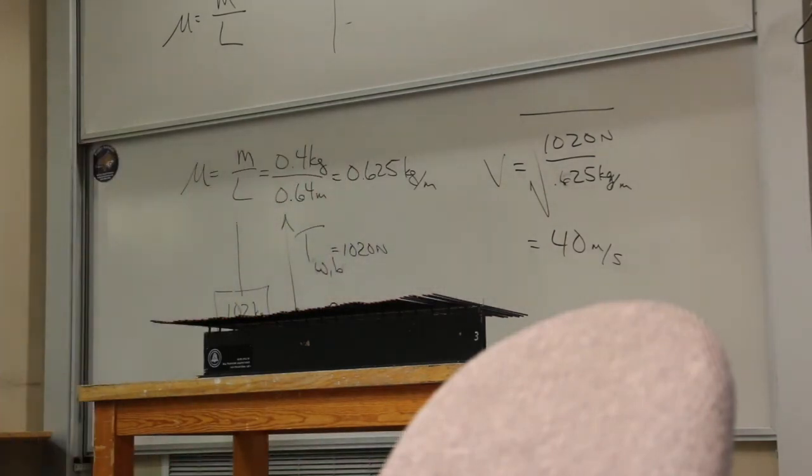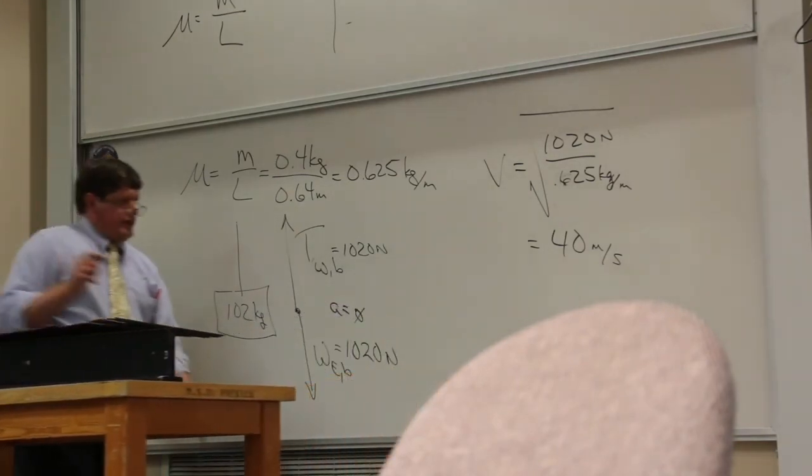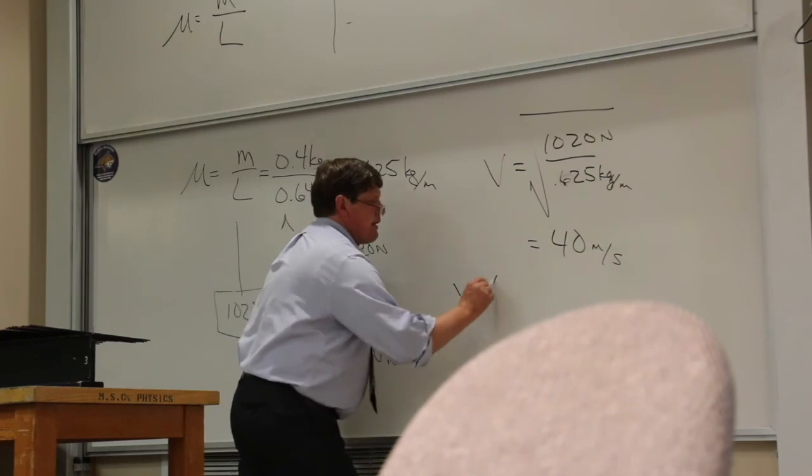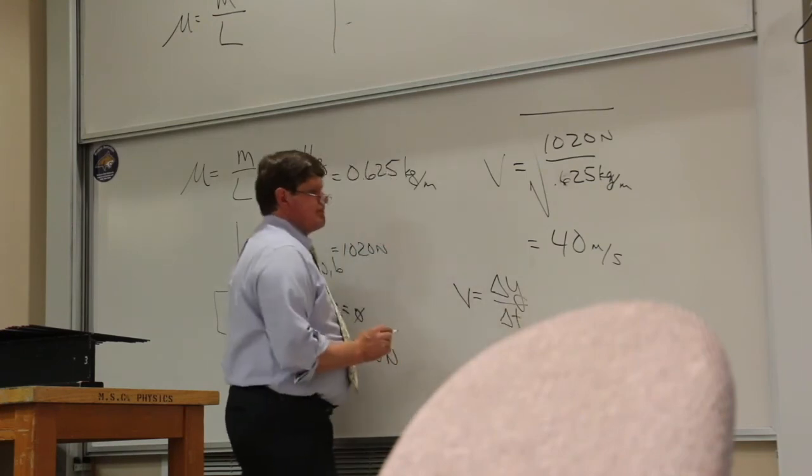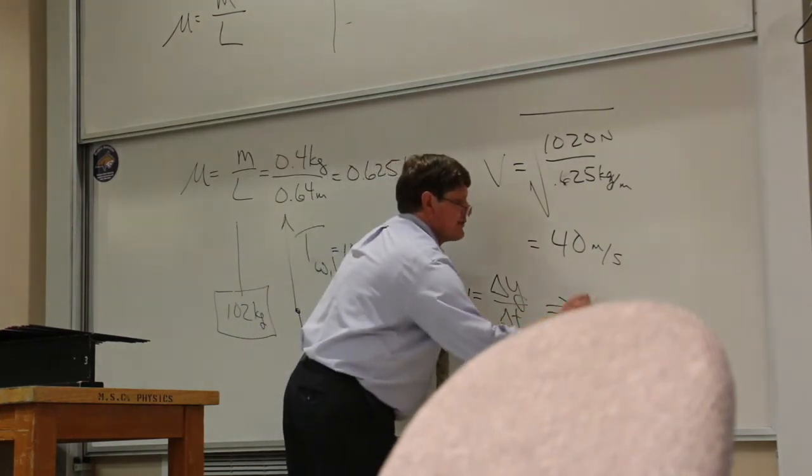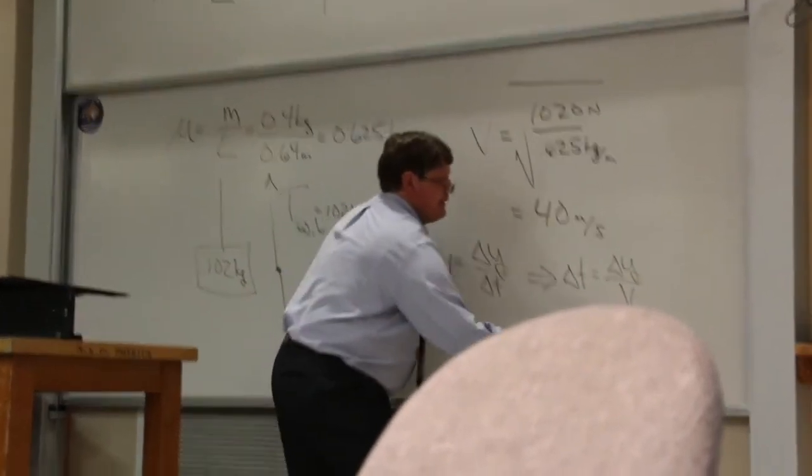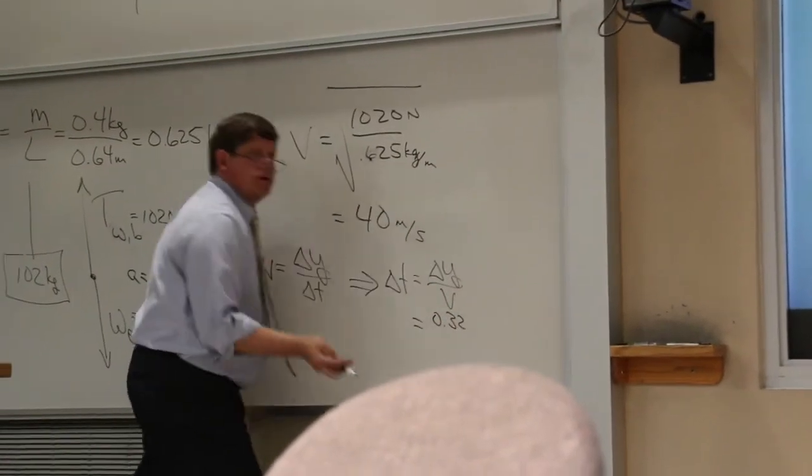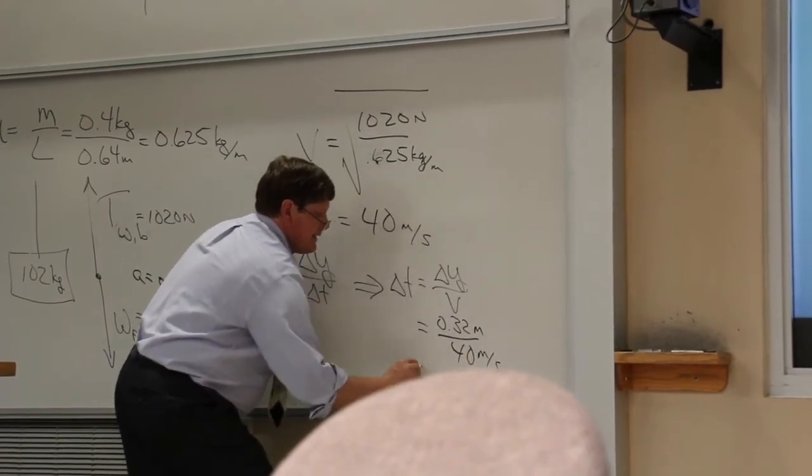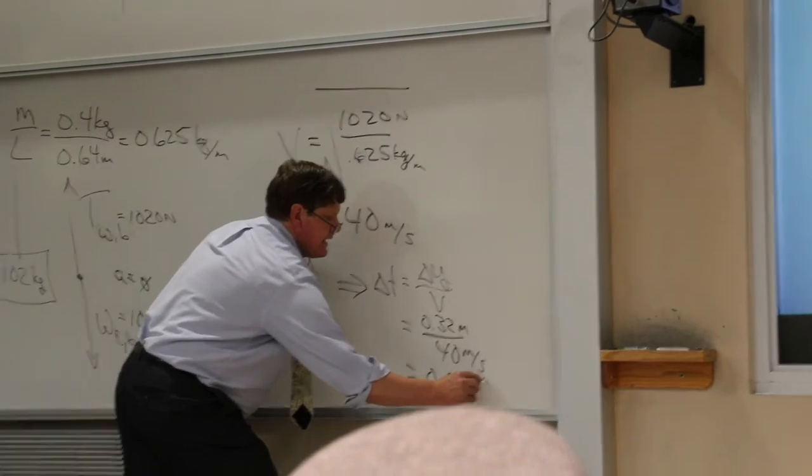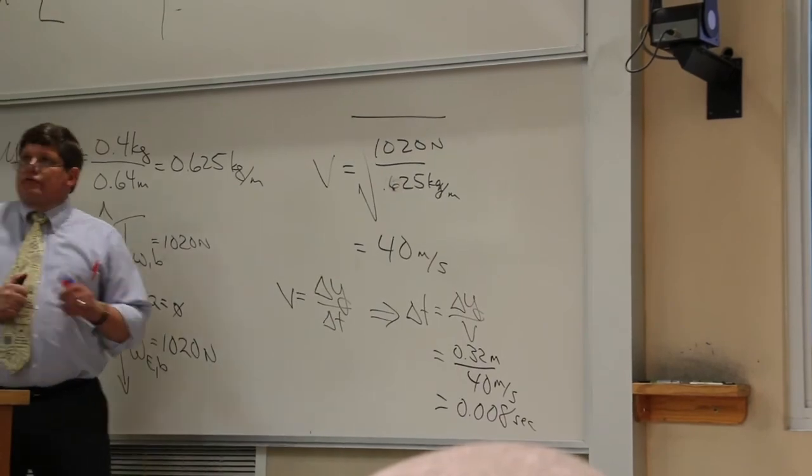Now, once I know the speed, it's very easy to find the time. If I use the definition of the speed, that's how far it travels. In this case, it's up, so I'll use delta y, divided by how much time. If I rewrite that, I have the time is equal to how far it travels divided by the speed. That's going to be 0.32, it only goes halfway up the wire, divided by 40 meters per second, and that's going to be 0.008 seconds. See if your neighbor got that answer. If not, slap them.